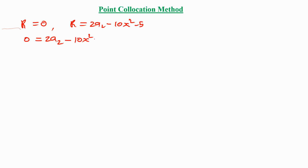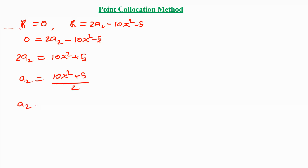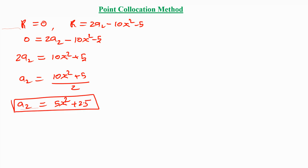Taking 2a₂ to the left-hand side and keeping the remaining terms on the right-hand side, we get a₂ = (10x² + 5) / 2, which equals 5x² + 2.5. The range of x is 0 ≤ x ≤ 1, so we can take any value in between 0 and 1. I take x = 0.5.